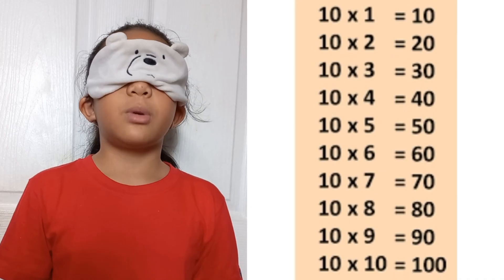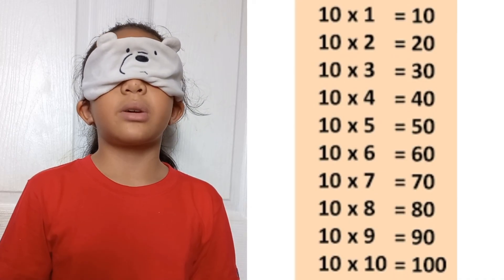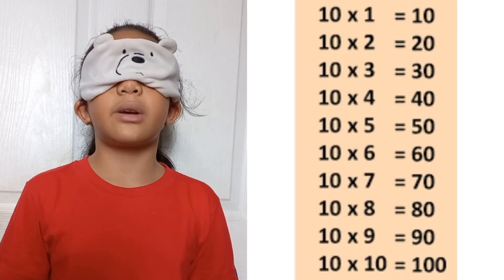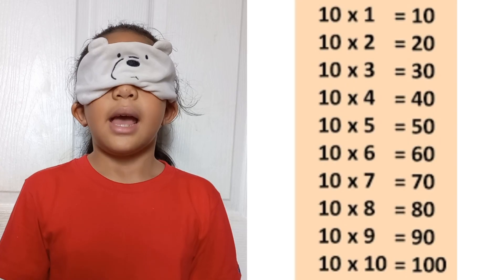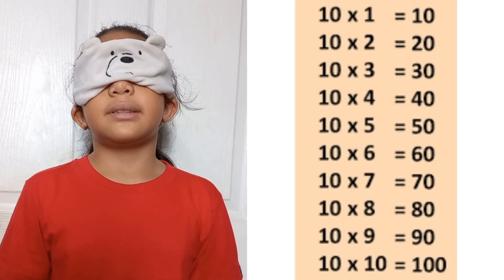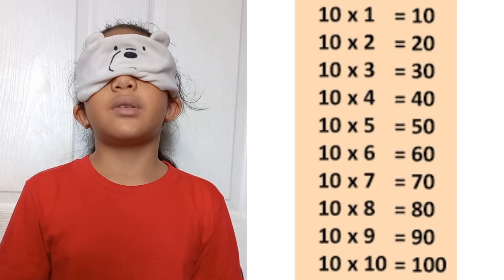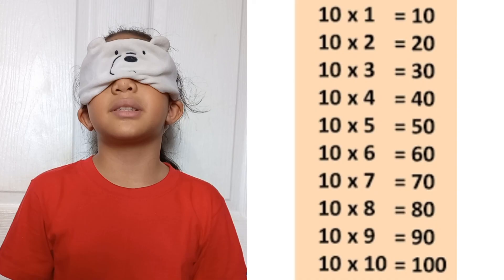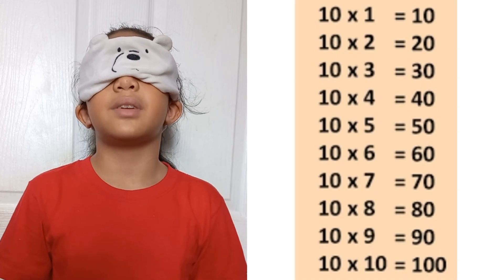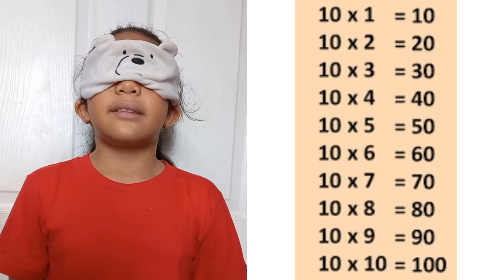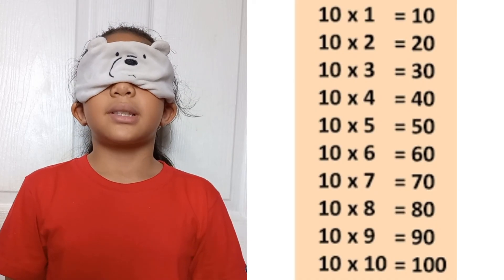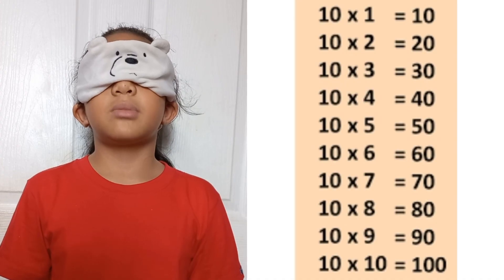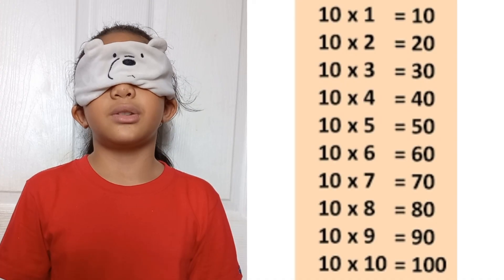10 times 1 equals 10. 10 times 2 equals 20. 10 times 3 equals 30. 10 times 4 equals 40. 10 times 5 equals 50. 10 times 6 equals 60. 10 times 7 equals 70. 10 times 8 equals 80. 10 times 9 equals 90. 10 times 10 equals 100.